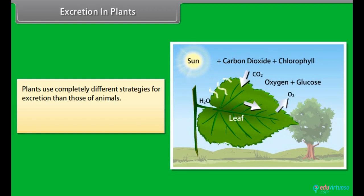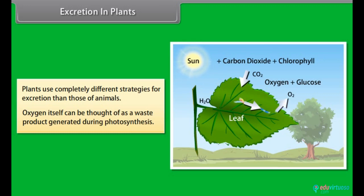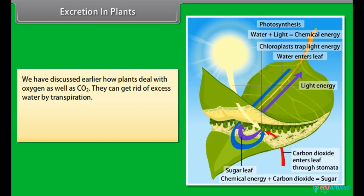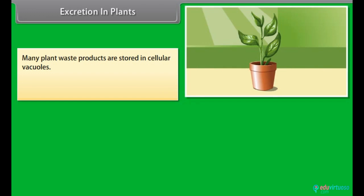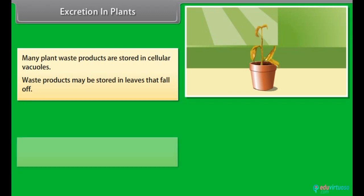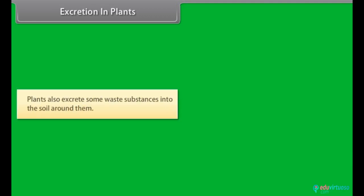Plants use completely different strategies for excretion than animals. Oxygen itself can be thought of as a waste product generated during photosynthesis, and plants can get rid of excess water by transpiration. For other wastes, plants use the fact that many of their tissues consist of dead cells, and they can even lose some parts such as leaves. Many plant waste products are stored in cellular vacuoles, in leaves that fall off, or as resins and gums especially in old xylem. Plants also excrete some waste substances into the soil around them.